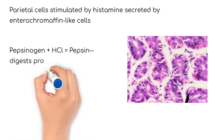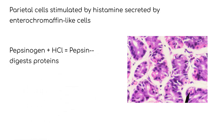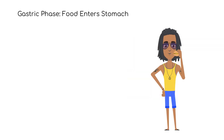Pepsinogen mixes with hydrochloric acid to produce pepsin, which helps to digest proteins. Remember, the main concept here is for the stomach to secrete substances to digest food. Once the food enters the stomach, the gastric phase is activated.